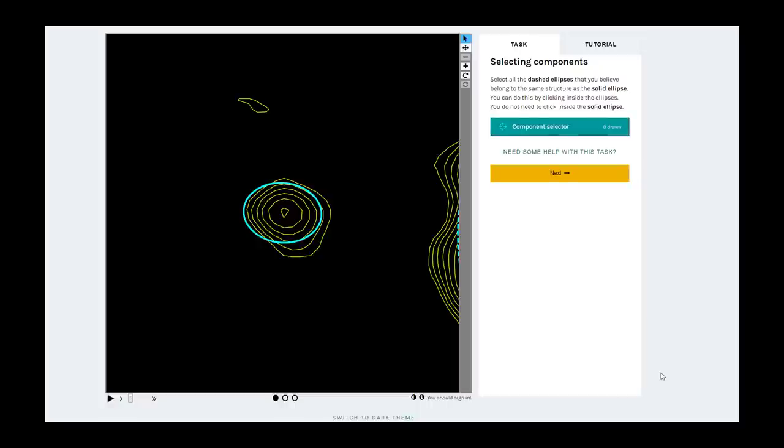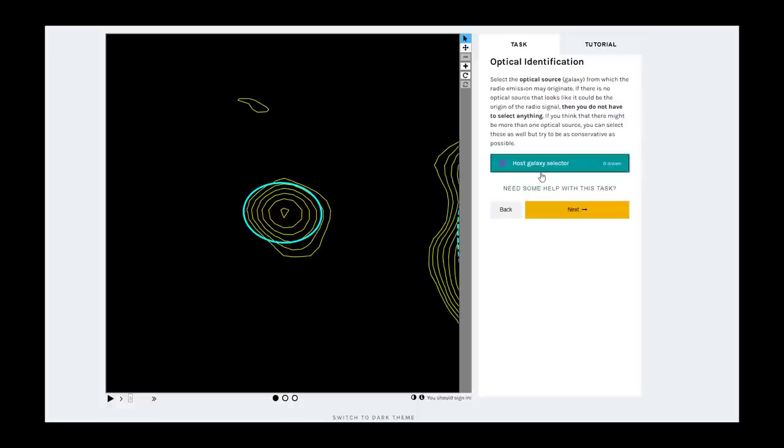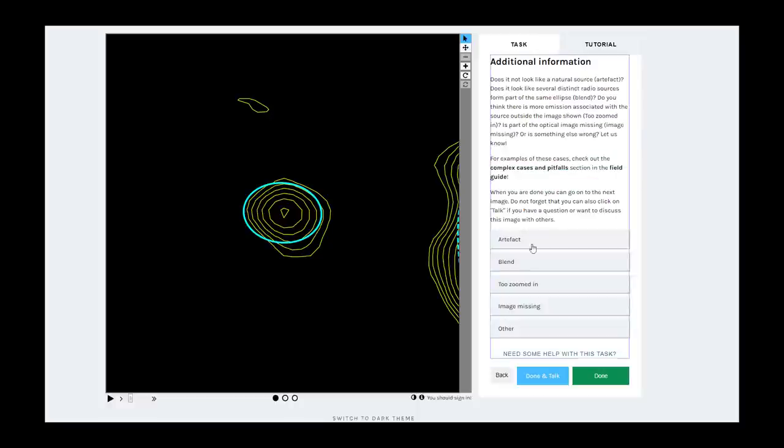As the last example, you might encounter cases where the optical image is missing. In this case, still try to associate blue ellipses as well as you can, but select optical image of the image that is missing in the last task.